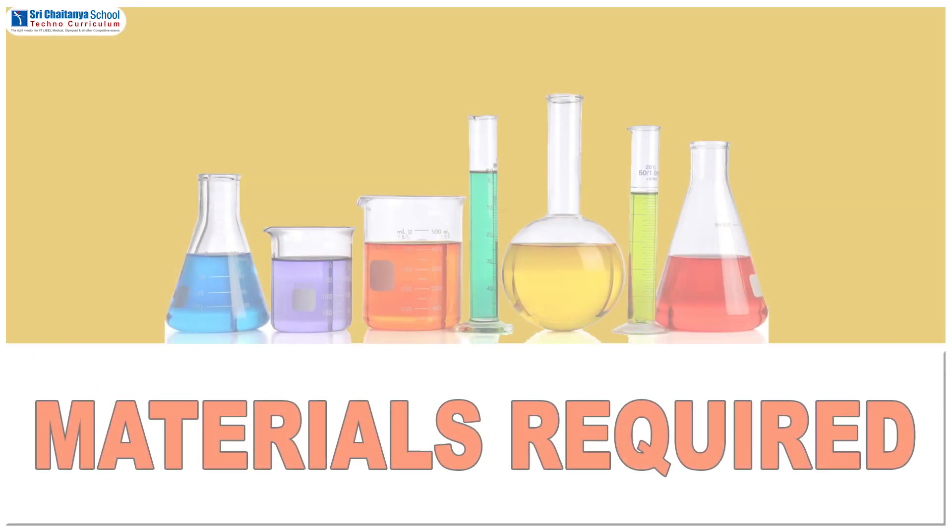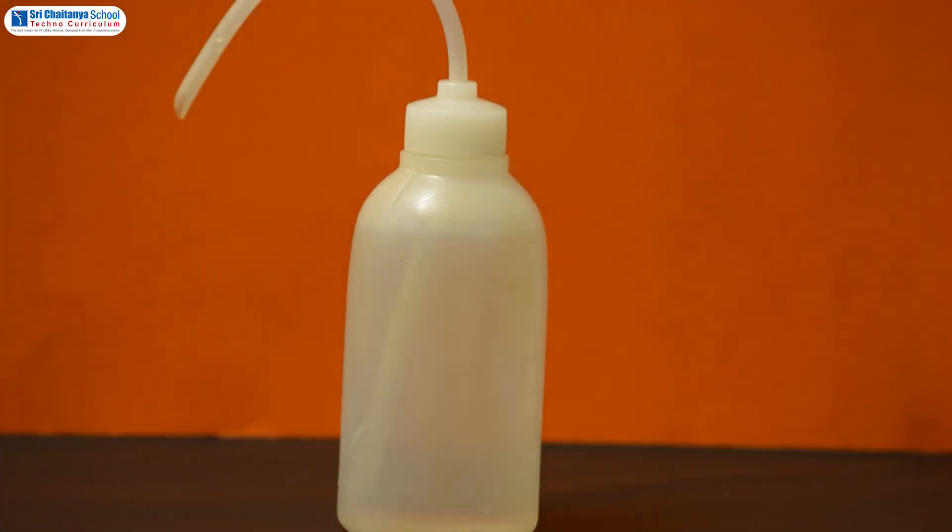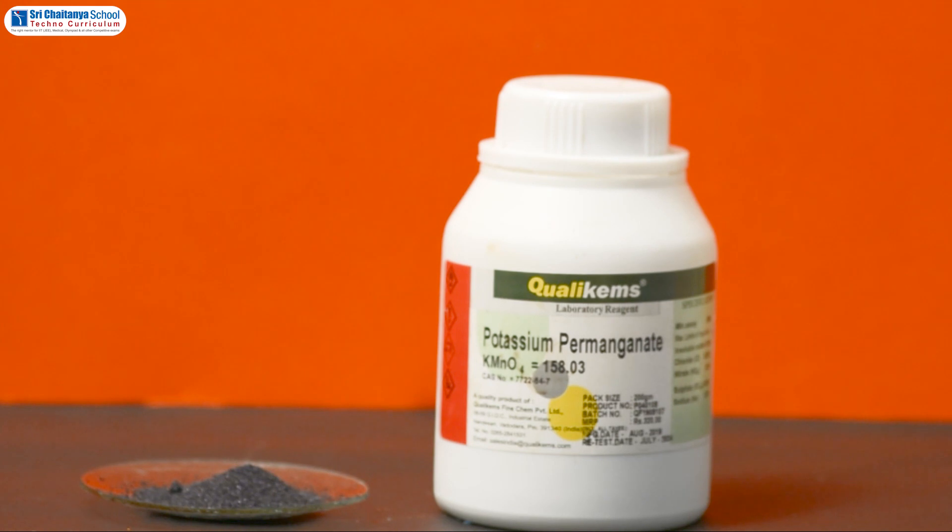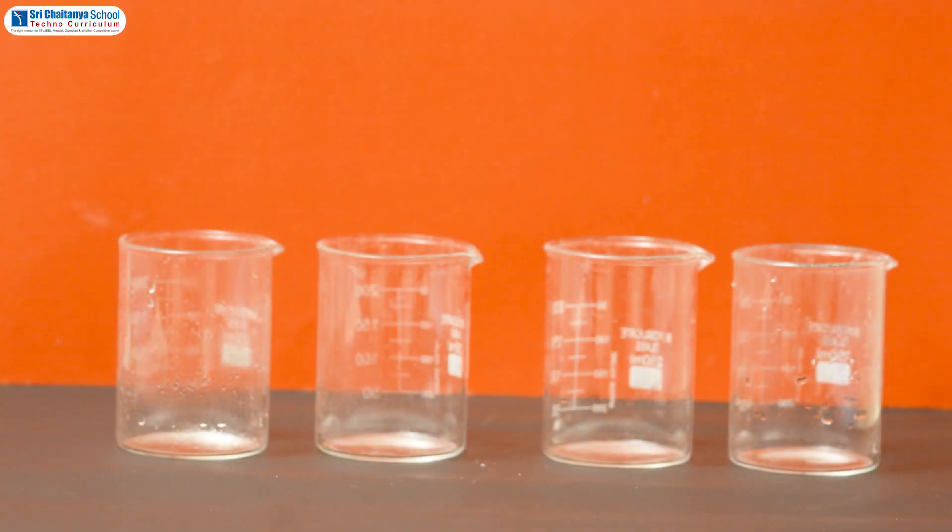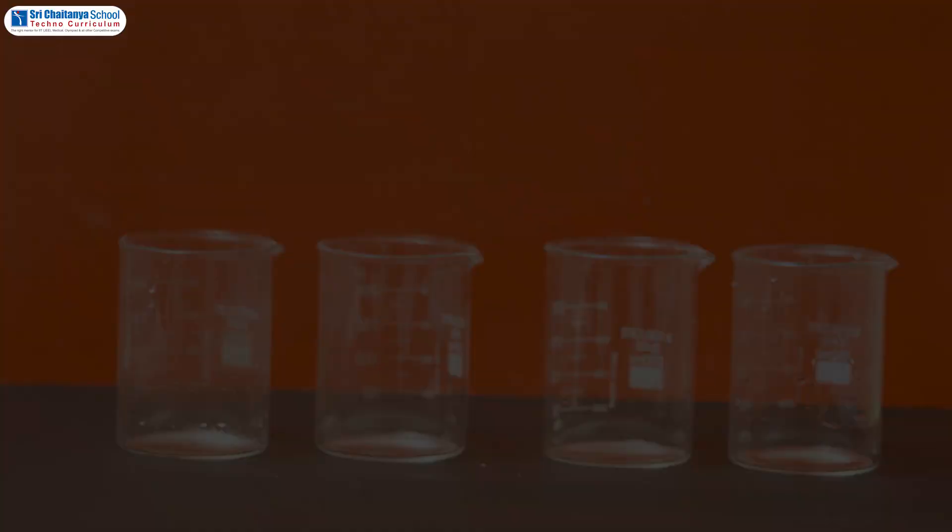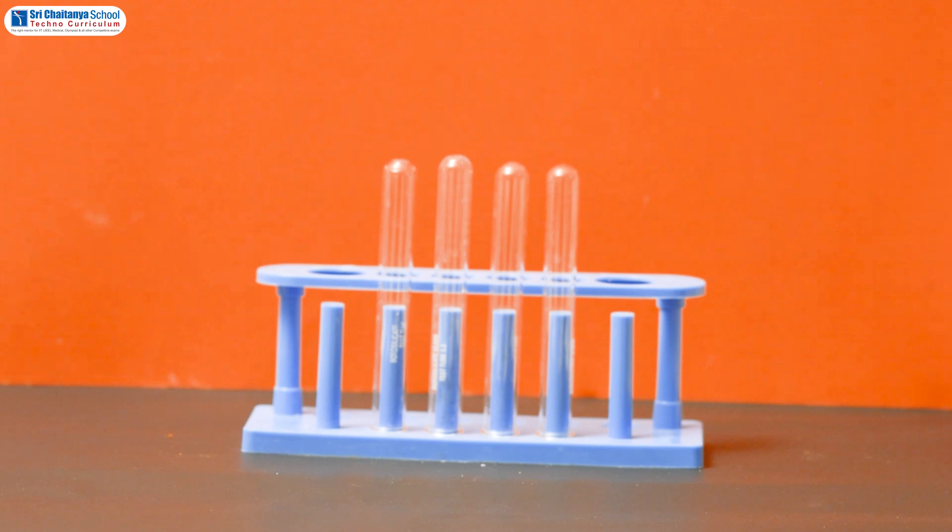The materials that are required: water, a few crystals of potassium permanganate, 4 to 5 beakers, and finally 3 to 4 test tubes.